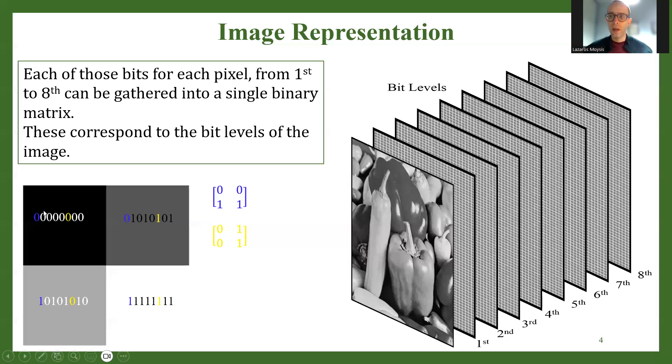Then we do the same thing by taking all the second bits from all the pixels and arrange them in a different matrix. This is the second level of the image or the second plane. Then we do the same thing with all the third bits, all the fourth bits, sixth, seventh, and finally all the eighth bits of each pixel. So we end up with eight different matrices. All of these are binary matrices with only zeros and ones, and each matrix corresponds to a bit plane. Simple as that.